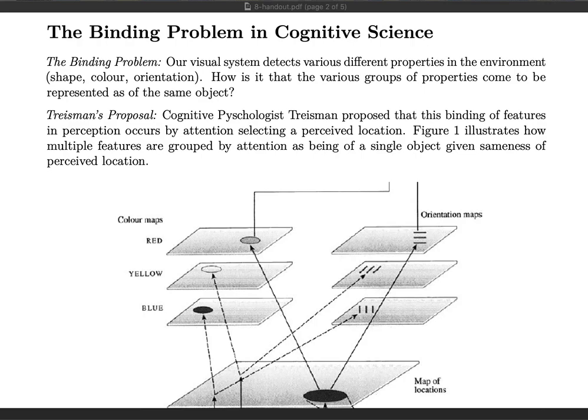Campbell gives a detailed theory of the sense of perceptual demonstratives by drawing on the cognitive science or psychology of attention. In this video I will give some background understanding of this theory and some studies done in the cognitive science of the nature of attention.